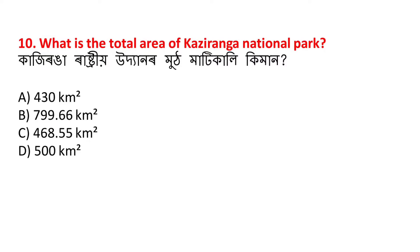What is the total area of Kaziranga National Park? Kajiranga rastiya udda nor mud mati gali kimaan? The answer is approximately 430 square kilometers.